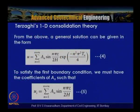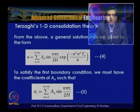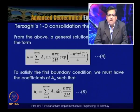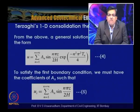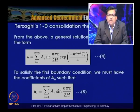The general solution for excess pore water pressure is: u = Σ(n=1 to ∞) An · sin(nπz/2h) · exp(−n²π²Tv/4), where Tv is the non-dimensional time factor defined as Tv = cv·t/hdr². Here t is the time required for a certain degree of consolidation, cv is the coefficient of consolidation, and hdr is the drainage path length.